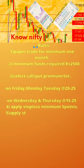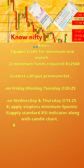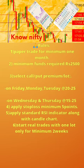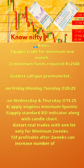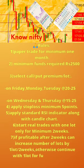4. Apply stop loss of minimum 5 points. 5. Apply the standard RSI indicator along with a candle chart. 6. Start real trades with one lot only for a minimum of 2 weeks. 7. If profitable after 2 weeks, increase the number of lots by 1 lot for the next 2 weeks; otherwise continue with one lot for a further 2 weeks.